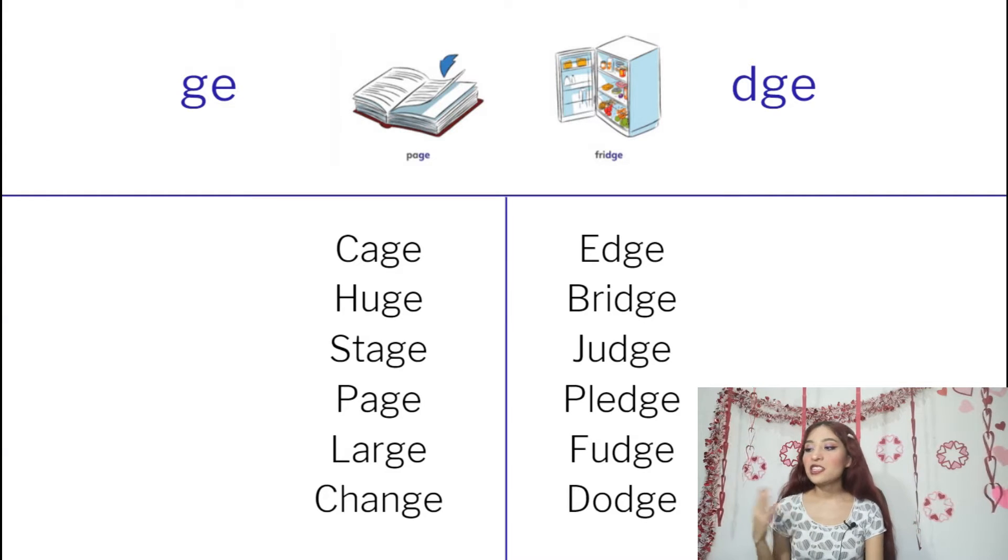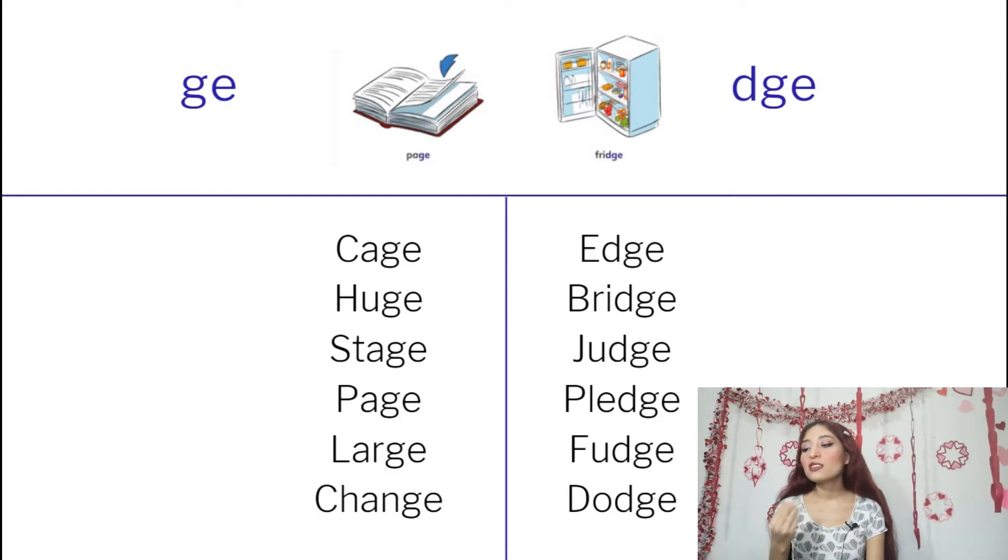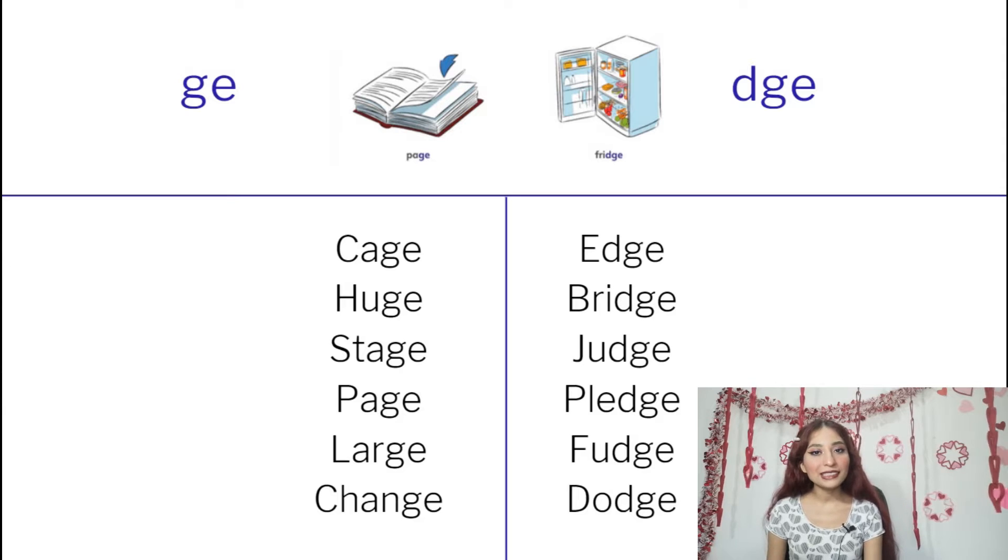Okay, so: cage, age, huge, bridge, stage, judge, page, pledge, large, fudge, change, dodge. Can you read it really fast? Can you try to pause this video and try to read it really fast, faster, faster, the faster that you can?